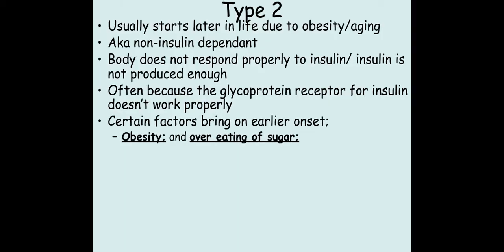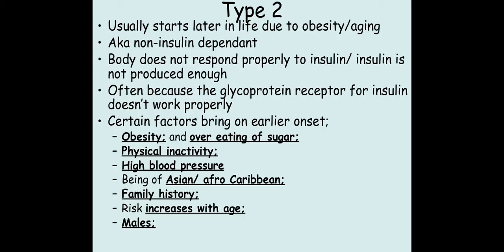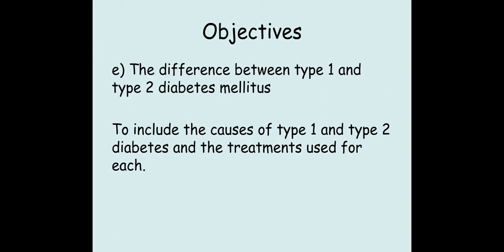Factors that can bring type 2 diabetes on include obesity, over-eating of sugar, physical inactivity, high blood pressure, being of Asian or Afro-Caribbean descent, family history, being older, it increases more in males, and also excessive alcohol intake.